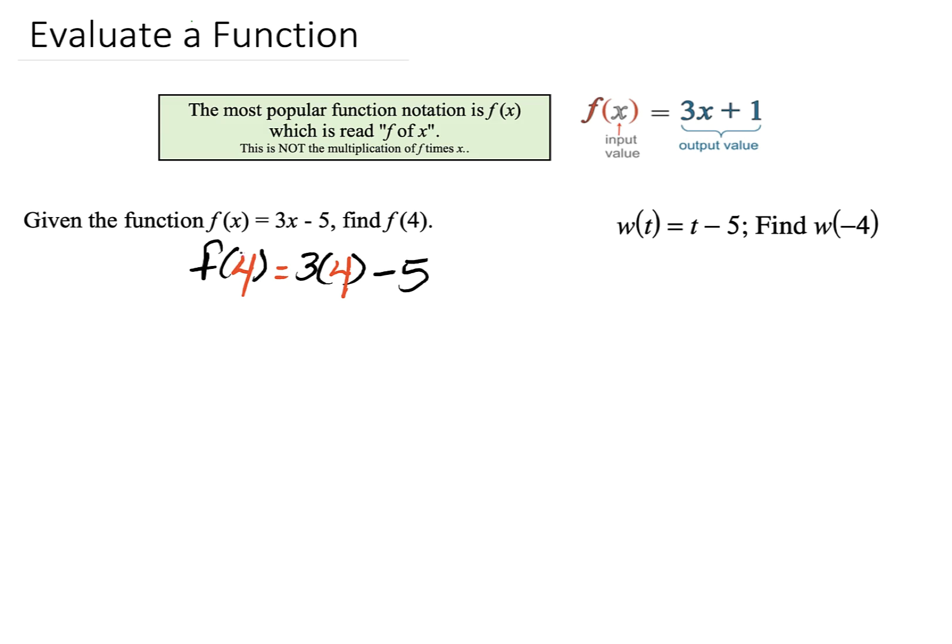So your first step, I'm finding f of 4. Wherever I saw x in my function, I replaced it by the number 4. Next, you're going to use PEMDAS. Can we multiply? Yes. So we're going to multiply 3 times 4, which will give us 12. And now we're going to subtract 5, and 12 minus 5 is 7.